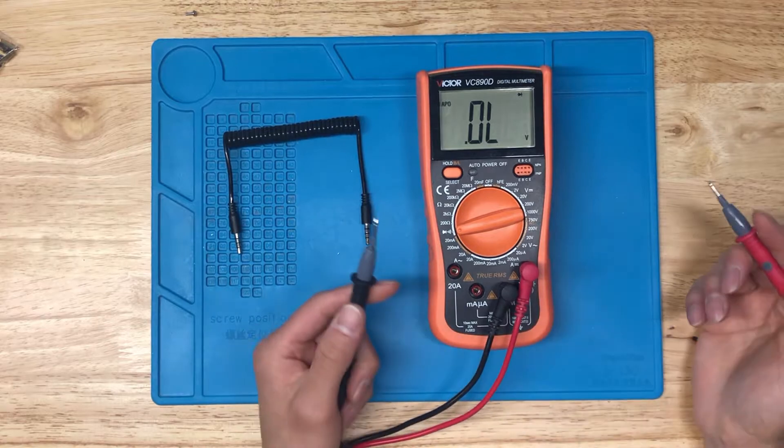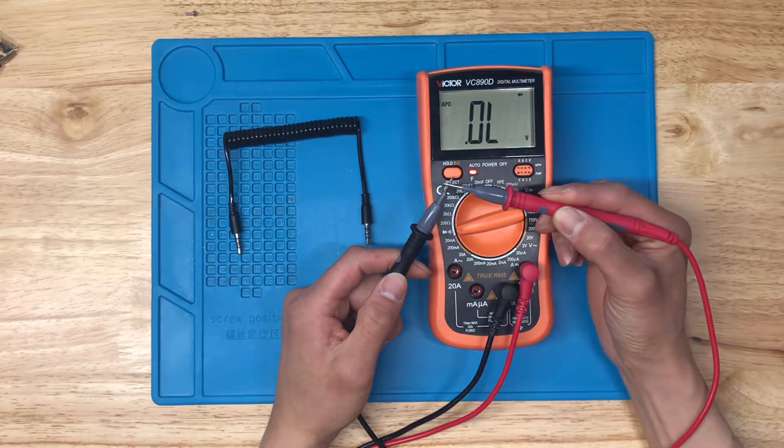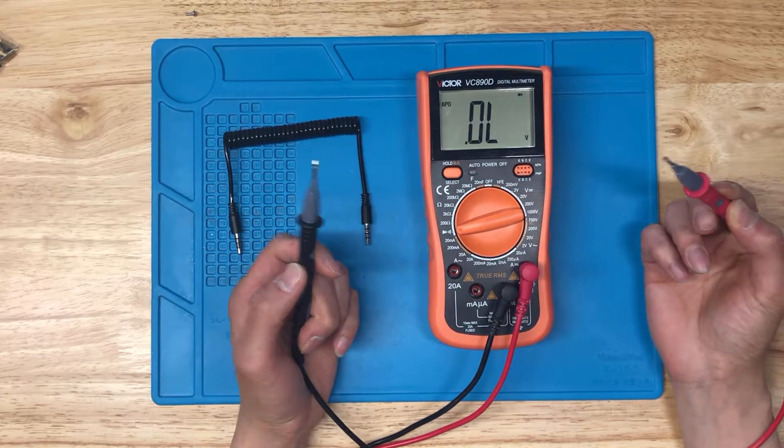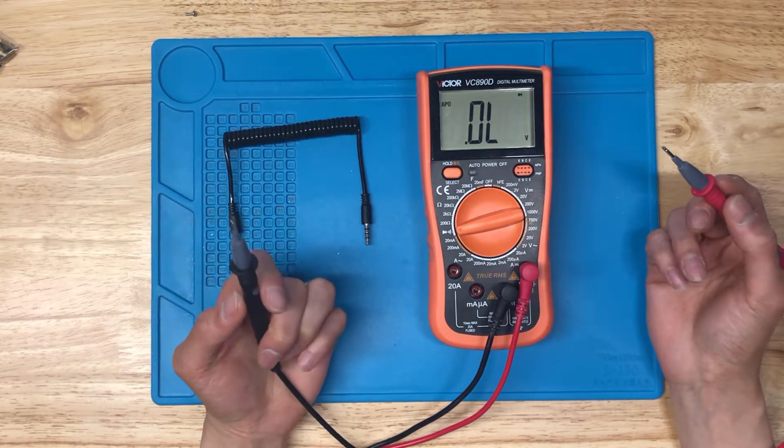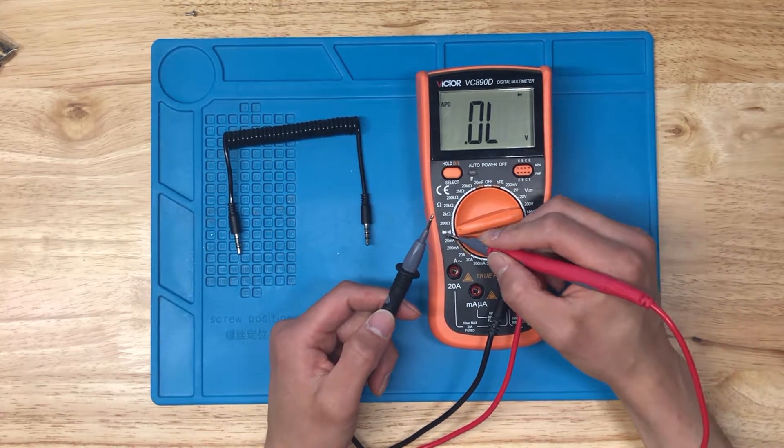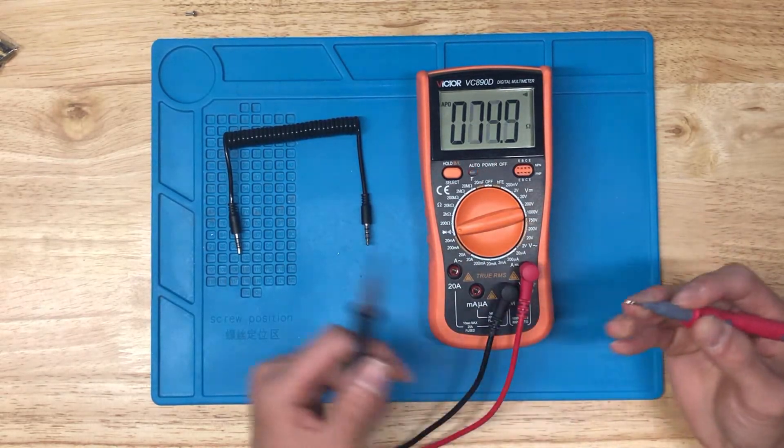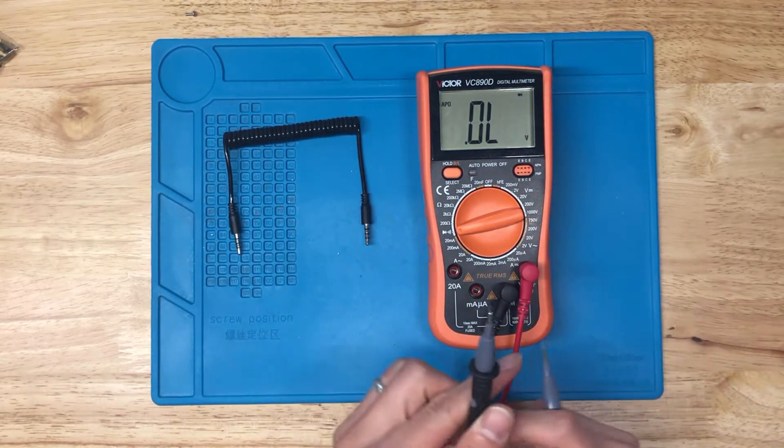First thing we want to check is if it beeps or not. So take the black end, red end, touch it together, it makes a beep. Like I said, not all multimeters will have a beep mode. In that case, sometimes it'll just be diode mode where the voltage drop is measured as zero.